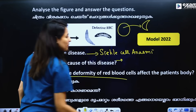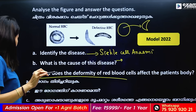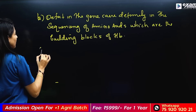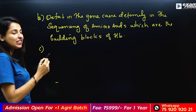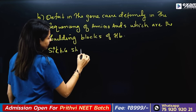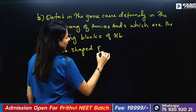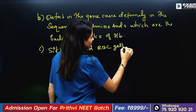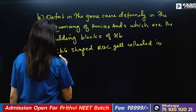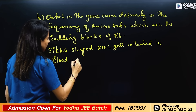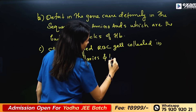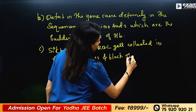How does the deformity of red blood cells affect the body of the patient? Sickle-shaped RBCs get collected in the blood capillaries and block the blood flow.